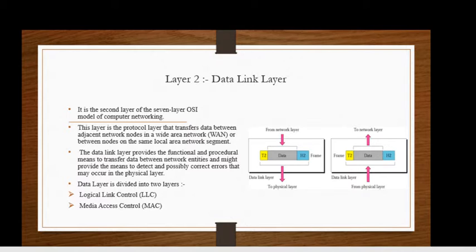The second layer is the data link layer. It is the second layer in the OSI model of computer networking. This layer is a protocol layer that transfers data between adjacent network nodes in a wide area network or between nodes on the same local area network segment.